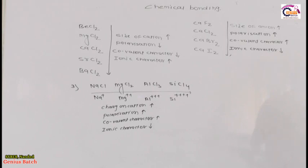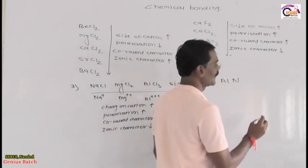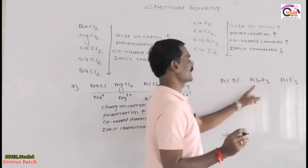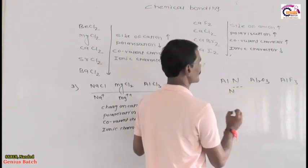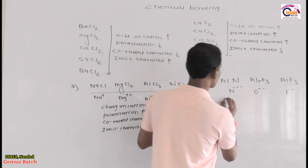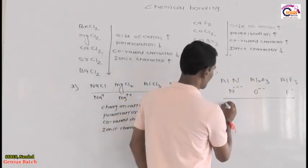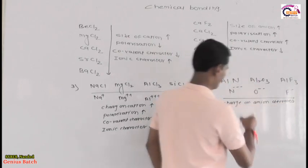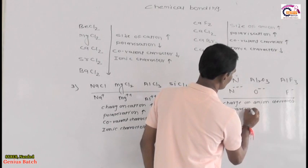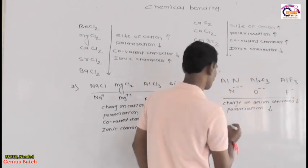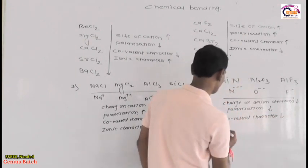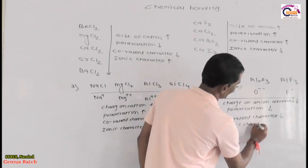The fourth example: AlN, Al₂O₃, and AlF₃ — aluminum nitride, aluminum oxide, and aluminum fluoride. The metal cation is the same but the anion changes. Moving left to right, the charge on the anion decreases (N³⁻, O²⁻, F⁻), so polarization decreases, covalent character decreases, and ionic character increases.